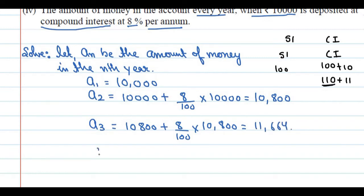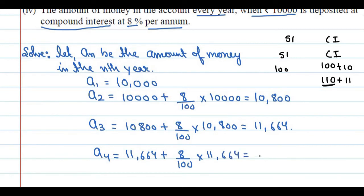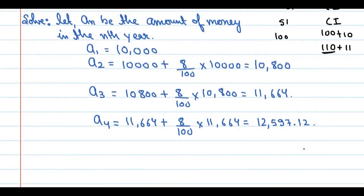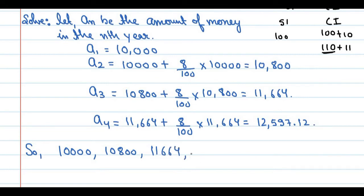Similarly, for the fourth year, since 3 years are complete, 8% is again applied on the previous amount: 11,664 plus 8% of 11,664, which gives 12,597.12 rupees. So the list we get is: 10,000 ; 10,800 ; 11,664 ; 12,597.12 ; and so on.